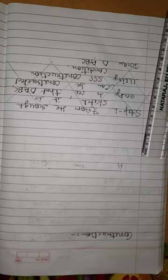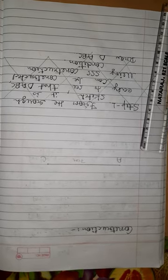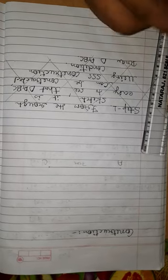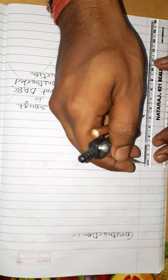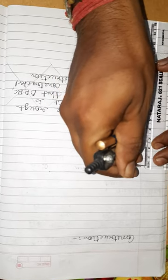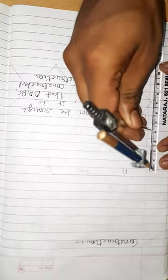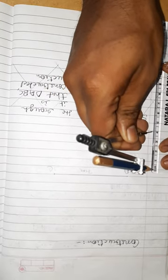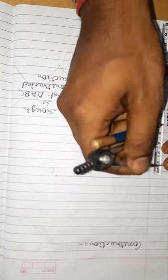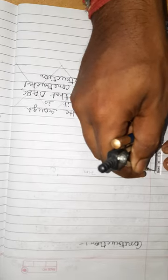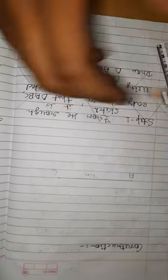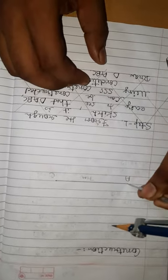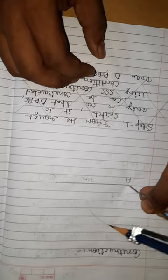Now draw an arc taking radius 4.5 cm from point A. Open the compass to 4.5 cm with the help of scale. You can see we will open it to 4.5 cm. Place the compass point at A and draw an arc of 4.5 cm.